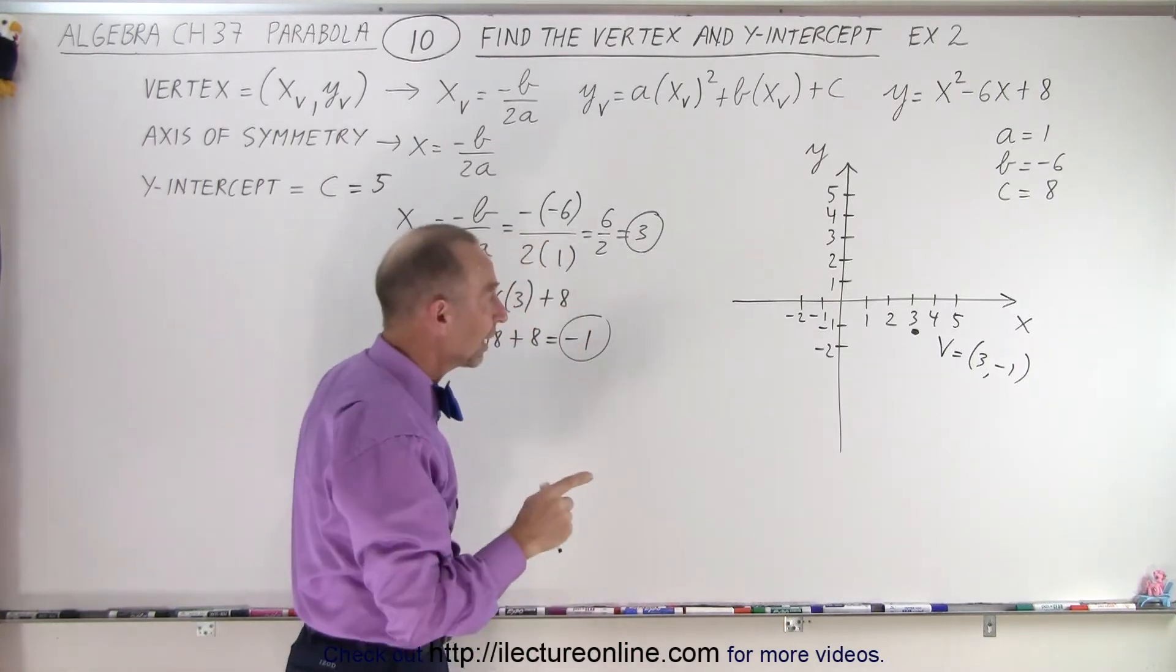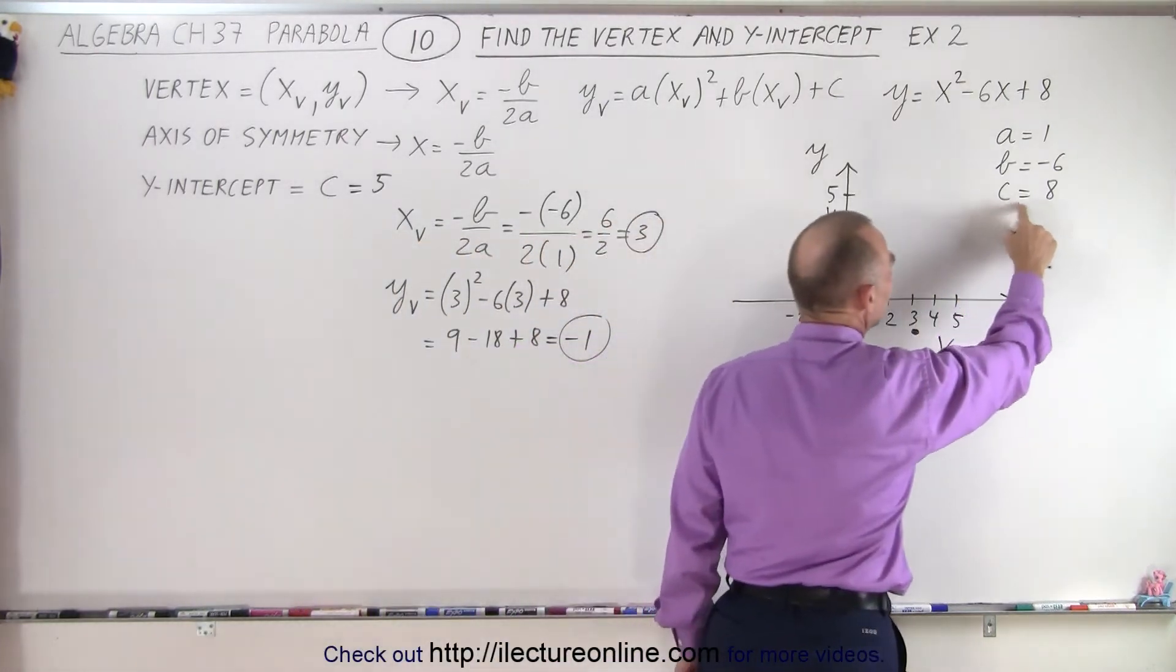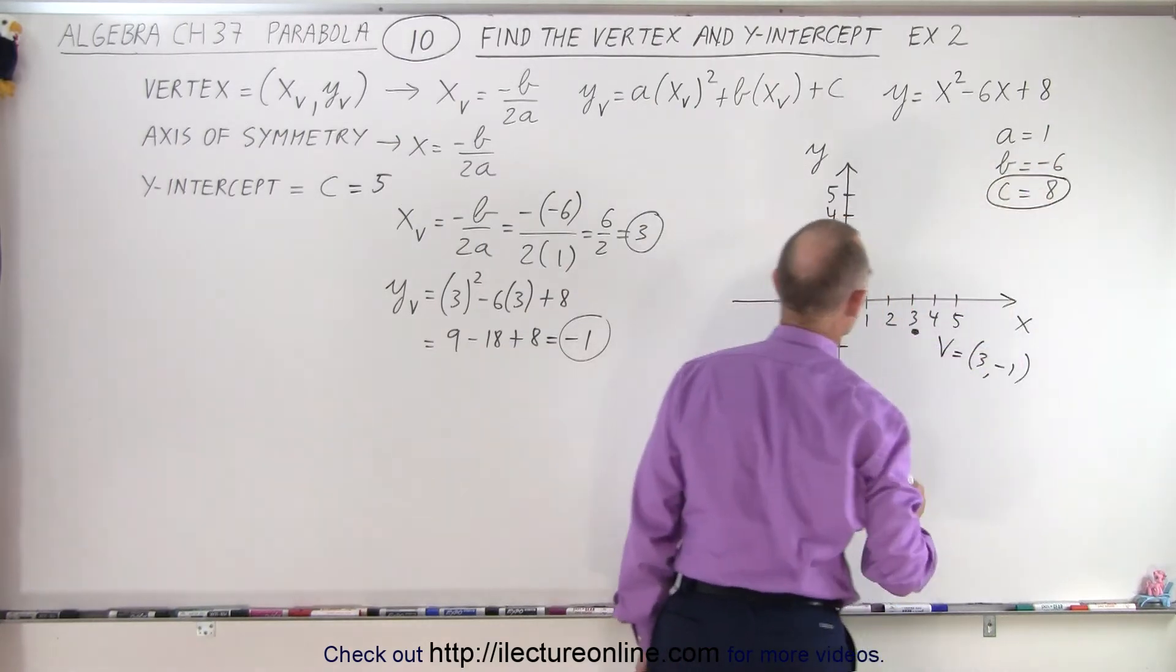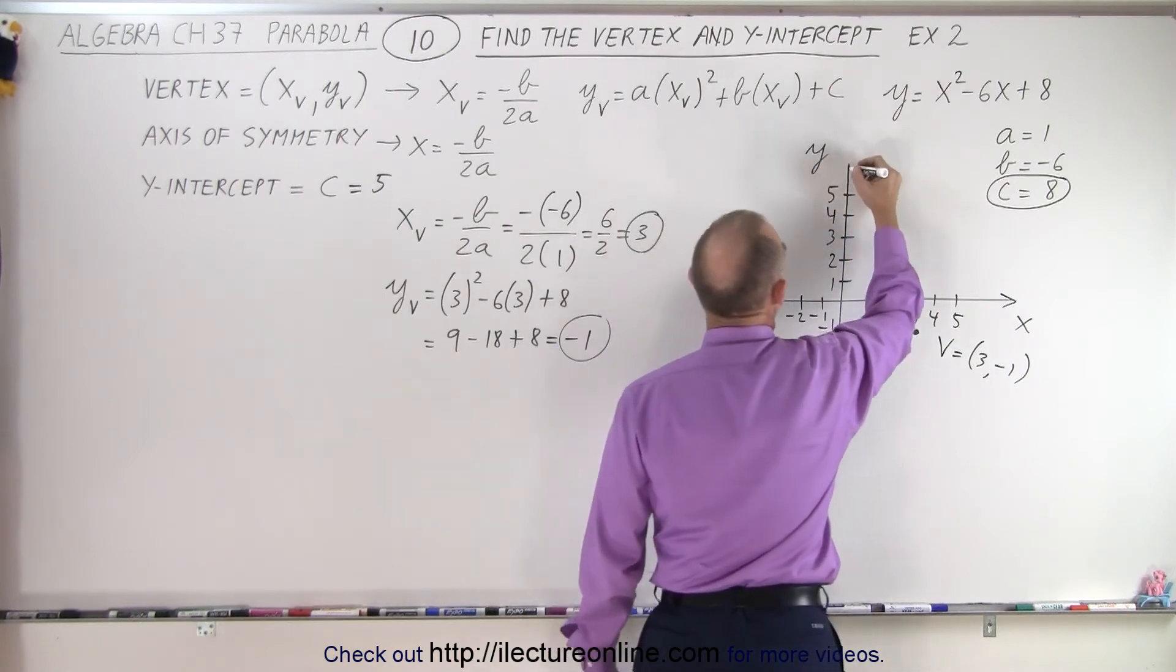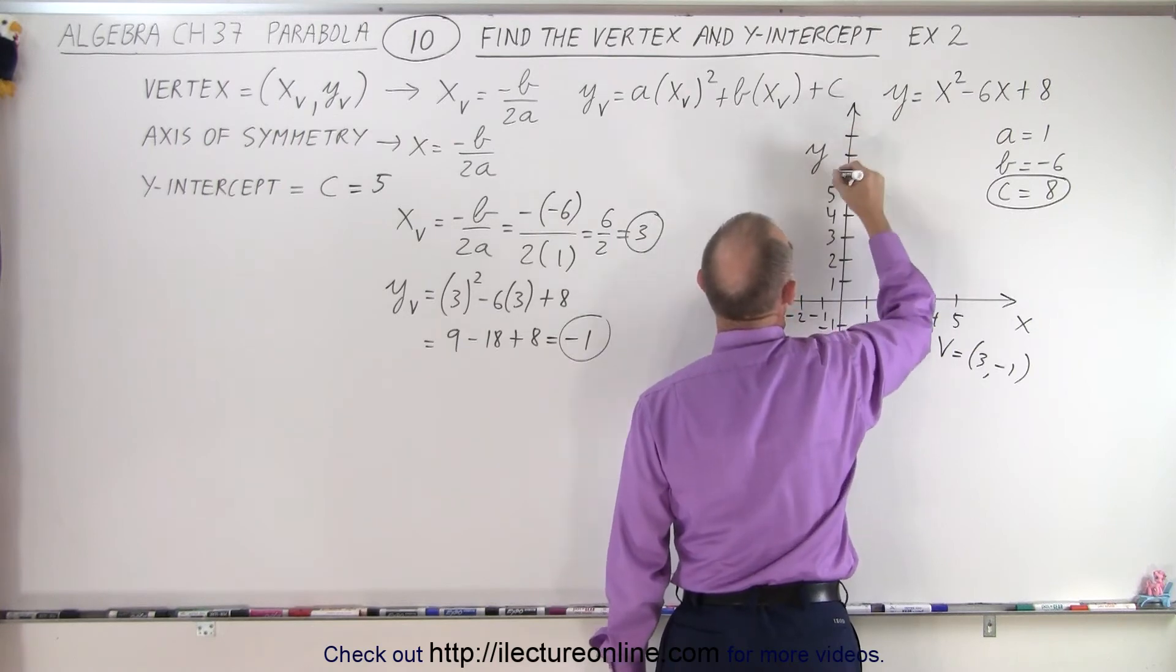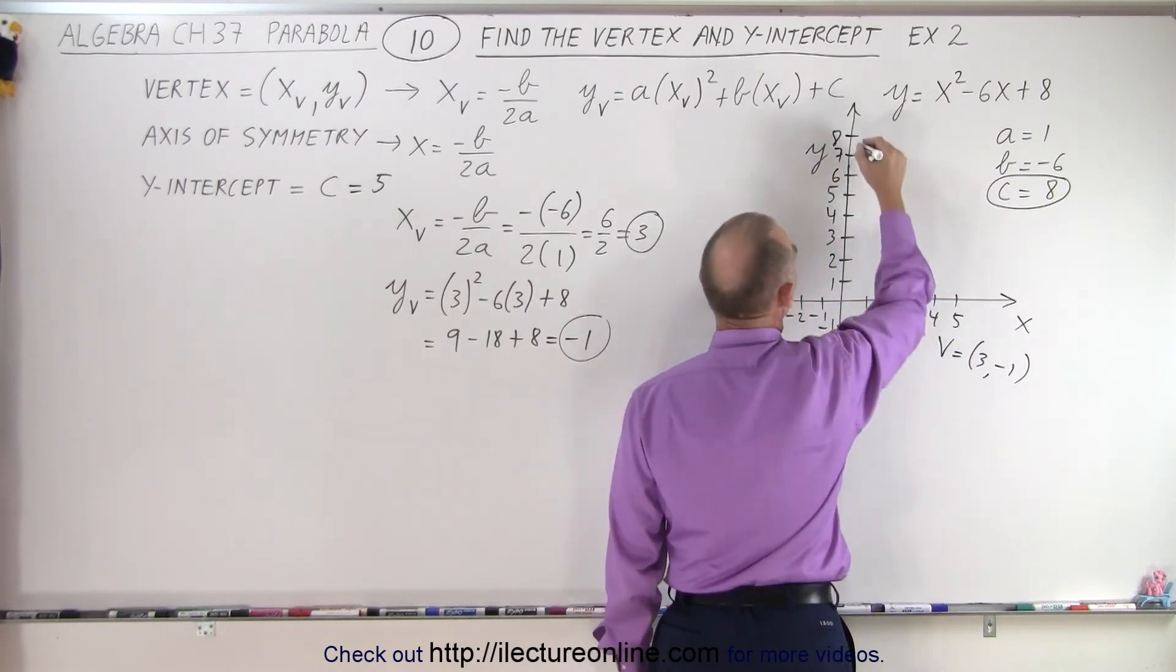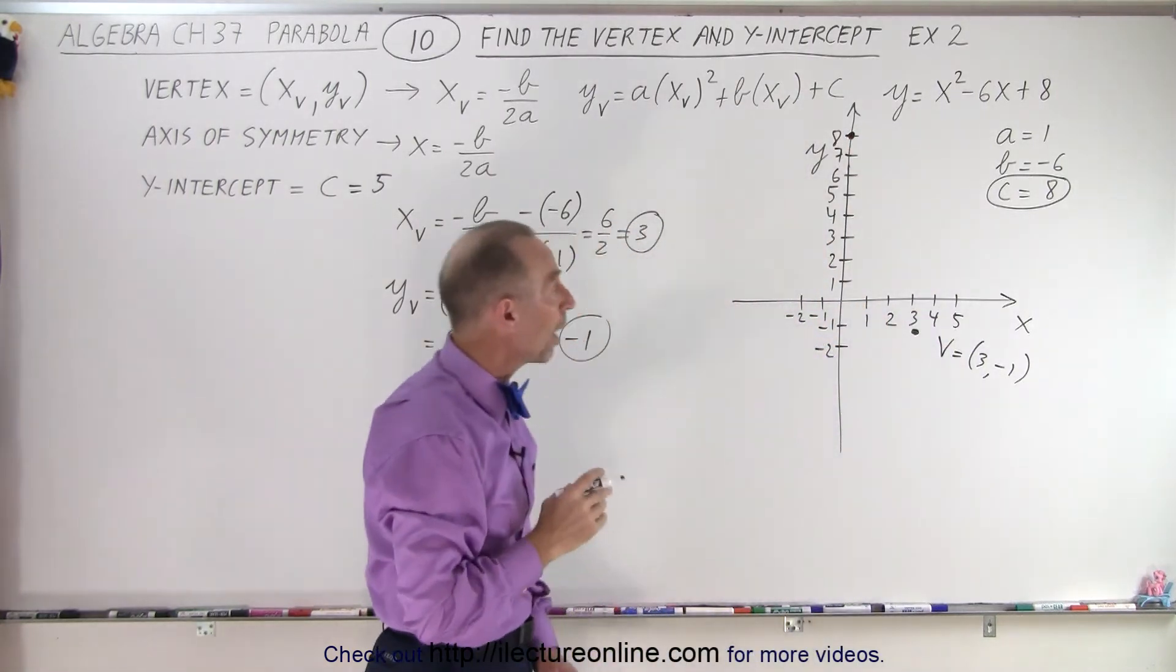Now we can find the place where the parabola will cross the y-axis, and that's where c is equal to 8, because this represents the y-intercept. So I'll need to make my graph a little bit taller. So make it a little bit taller like this. So this is 6, 7, and 8. So when x equals 0, y equals 8. That is where it crosses the y-axis.